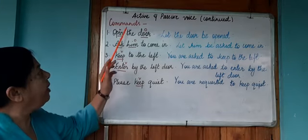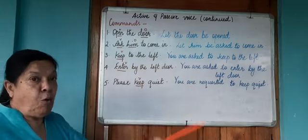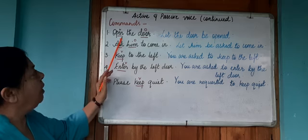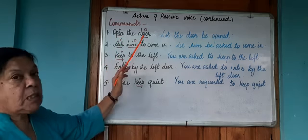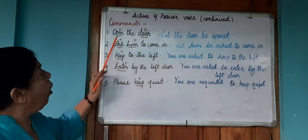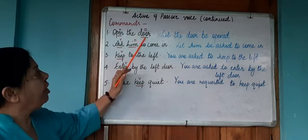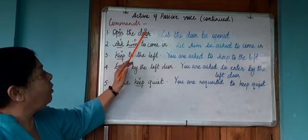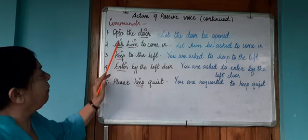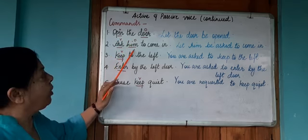Now, let's see how we change commands from active to passive voice. In sentence 1, we have 'open the door.' This is a command or an order. You will observe that 'open' is the verb. What have you to open? The door becomes the object. In sentence 2 also, 'ask' is the verb. Ask whom? Ask him. 'Him' becomes the object.